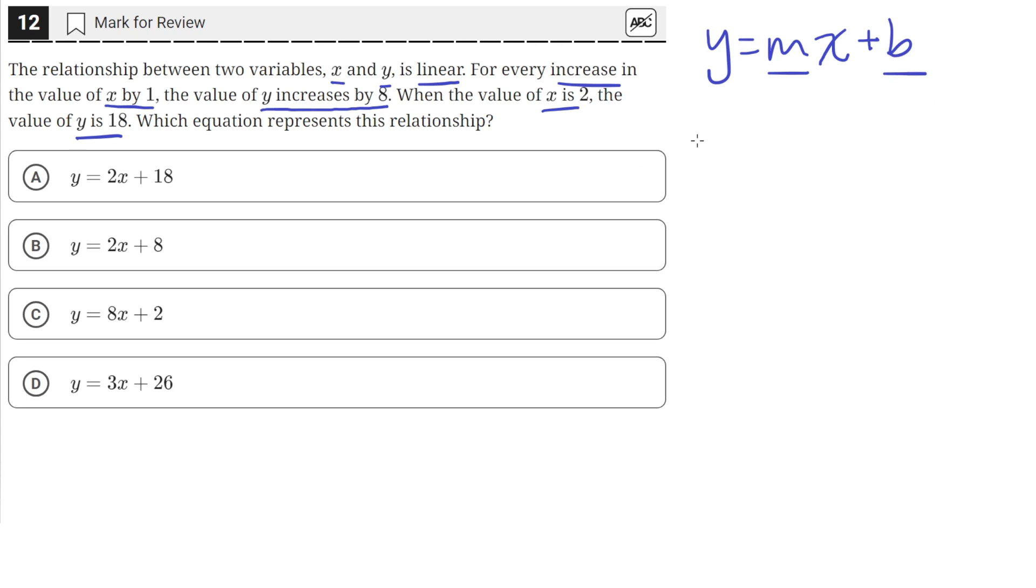So we're given that for every increase in x by 1, the value of y increases by 8. This gives us the slope, because slope is equal to the change in y over the change in x for the line.